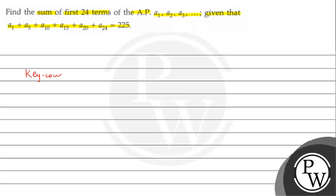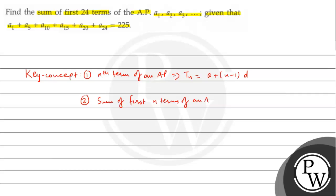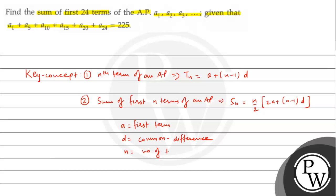Pahle AP ki concept likh lete hain. The nth term of an AP is given by the formula T_N = A plus (n minus 1) into D. Doosra, sum of first n terms of an AP is given by the formula S_N = n by 2 into (2A plus (n minus 1) into D), where A is the first term, D is the common difference, and n is the number of terms.